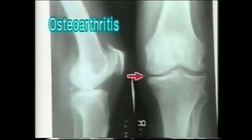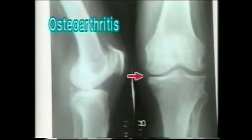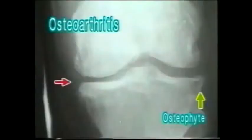Cartilage destruction and reduced joint space is the most important X-ray feature of osteoarthritis. The cartilage destruction is usually more on the medial side. Note that the joint space is more reduced on the medial side, and the fibula marks the lateral side.